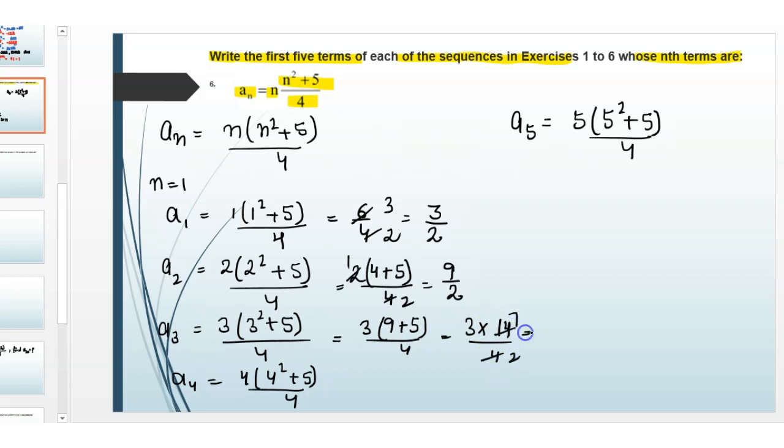This simplifies to 42/4 = 21/2. For a4, 4(4² = 16 plus 5 = 21)/4, the 4s cancel, giving 21.